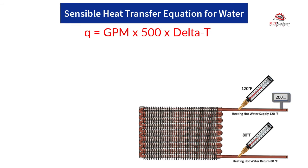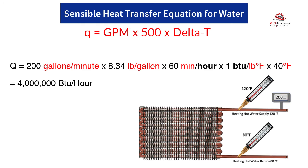With all these units, we can see which units of value remain by crossing out those that are eliminated in the formula — such as Q equals 200 gallons per minute times 8.34 pounds per gallon times 60 minutes per hour times 1 BTU per pound per degree Fahrenheit times 40 degrees Fahrenheit — which leaves BTUs per hour.